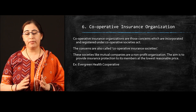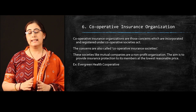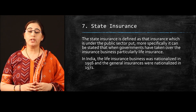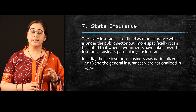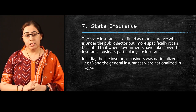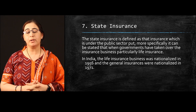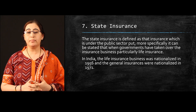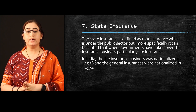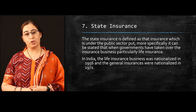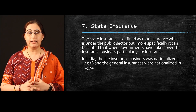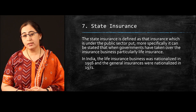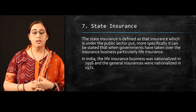The very important type is state insurance organization. State insurance is defined as insurance which is under the public sector. When we talk about India, the insurance business is largely under the state insurance sector. LIC is an example — it is in the business of life insurance and is under public enterprise as a government company, with most of the stake held by the central government. When the government takes over insurance business, particularly life insurance, it comes under the category of state insurance. In India, the life insurance business was nationalized in 1956, whereas general insurance was nationalized in 1971.